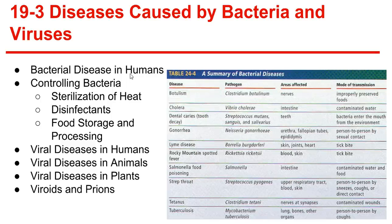Preventing bacterial disease. We use vaccinations, which are a preparation of weakened or killed pathogens, and antibiotics, which are compounds that block the growth and reproduction of bacteria. Controlling bacteria involves various methods including sterilization, disinfectants, and food storage and processing.